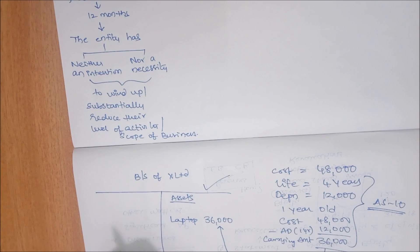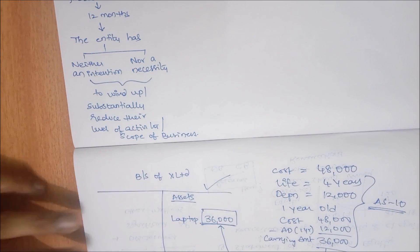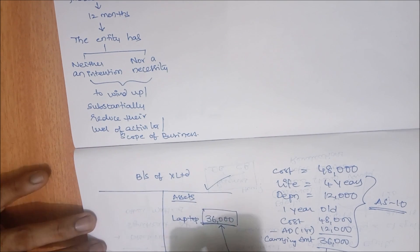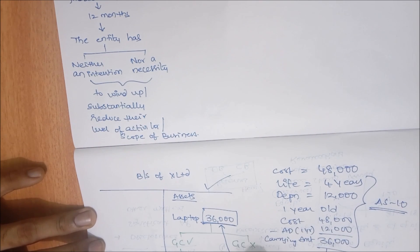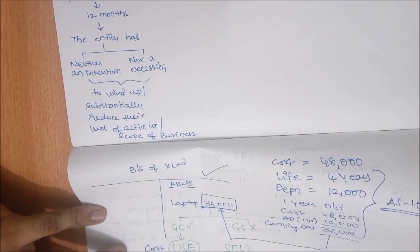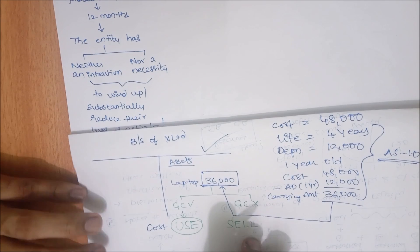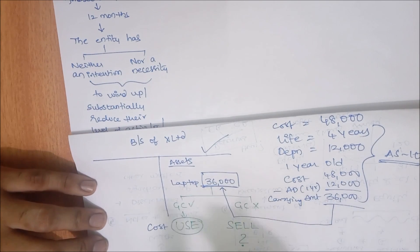Now imagine if you have filed a winding-up petition, or there is a merger, takeover, amalgamation, or voluntary winding up. The question is: will you be able to fetch 36,000 from the sale of this laptop? If the entity is a going concern, we use the laptop. If it is not a going concern, we sell the laptop. By using it, I recover 36,000 — that's my gut feeling.